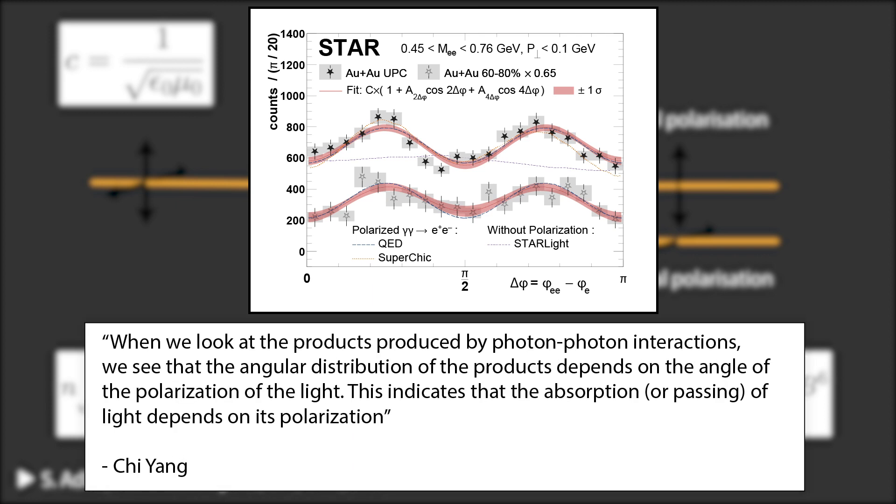The scientists said, when we look at the products produced by the photon-photon interactions, we see that the angular distribution of the products depends on the angle of the polarization of the light. This indicates that the absorption or passing of light depends on its polarization. That is, that the magnetic field has introduced a polarization-dependent refractive index.